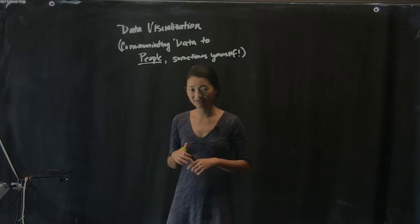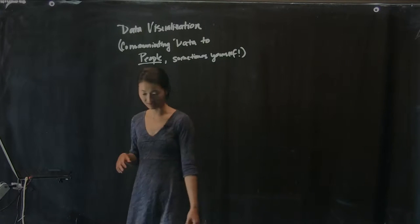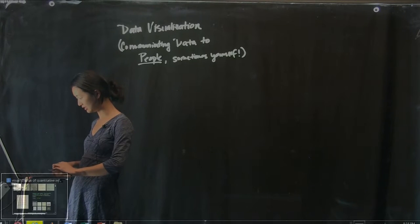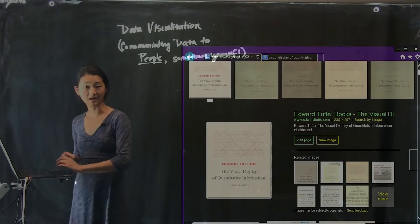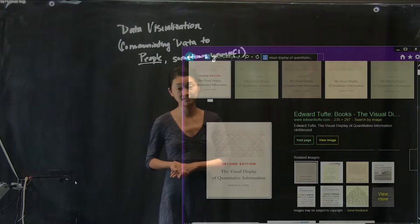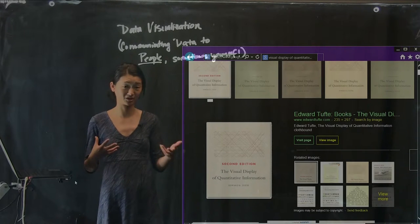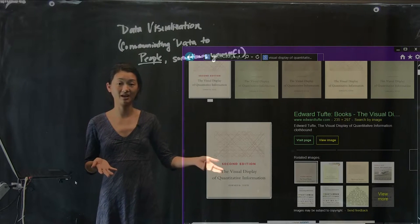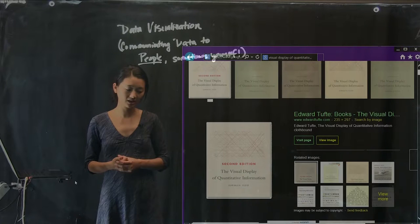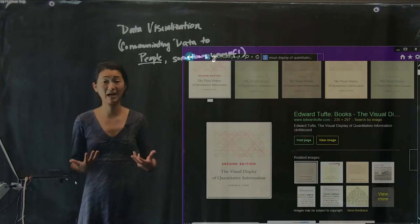So the field of data visualization really got its start with this guy named Edward Tufte. And he wrote this book back in 1982 that is entitled The Visual Display of Quantitative Information. It's now in second edition. It's this large book that's actually pretty nice to have on your coffee table. It's a nice coffee table book because there's pretty pictures in it. I highly recommend that you find a copy and at least look at it, if not read it. Because he really did a really good job of codifying some of the ways to think about how to visualize data.